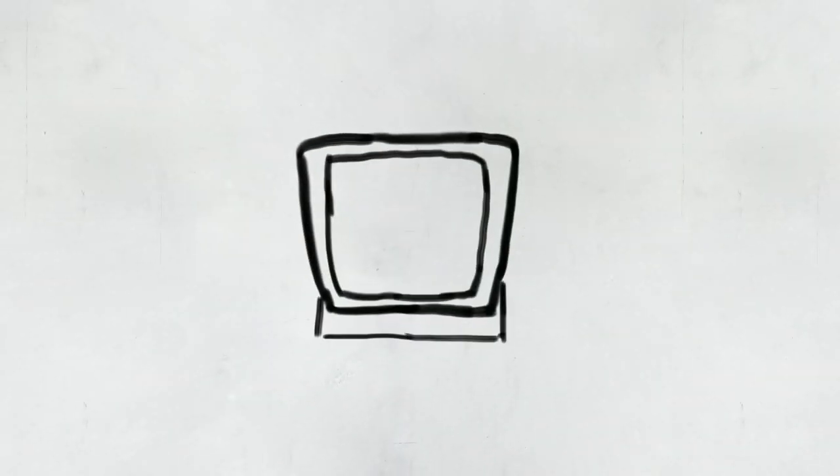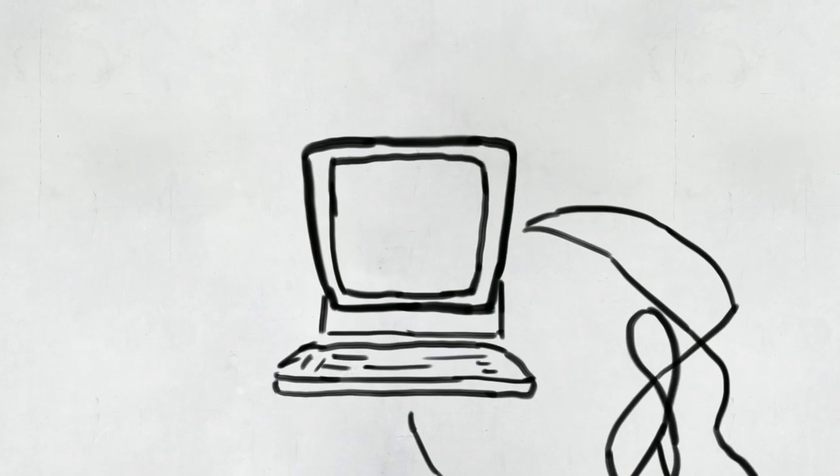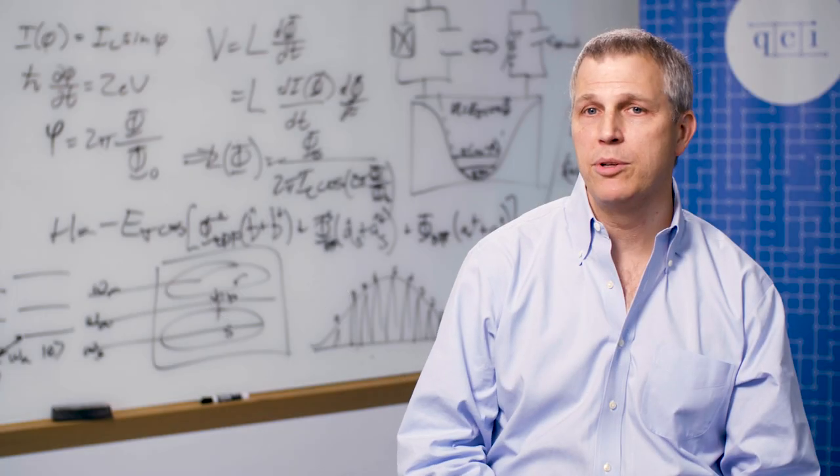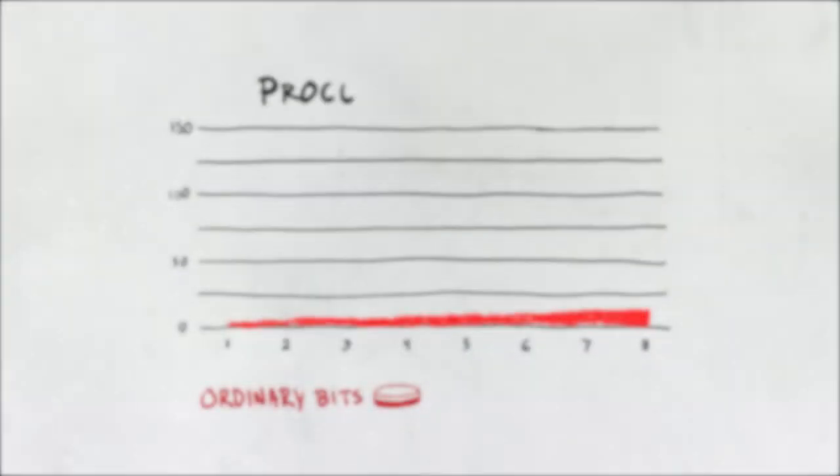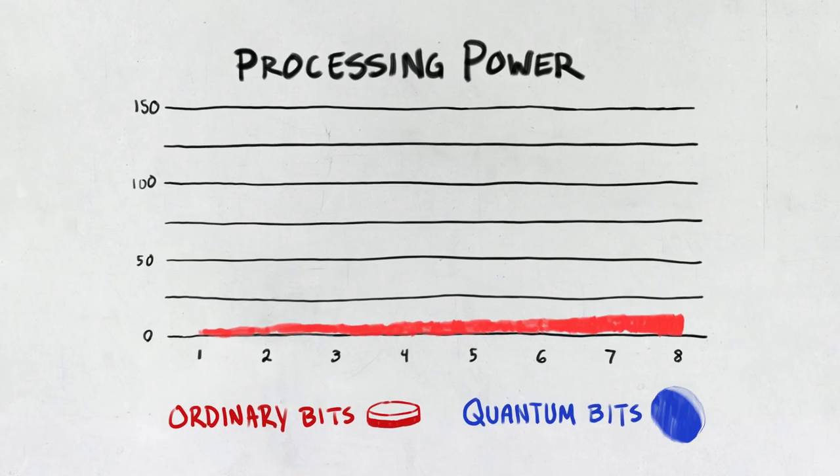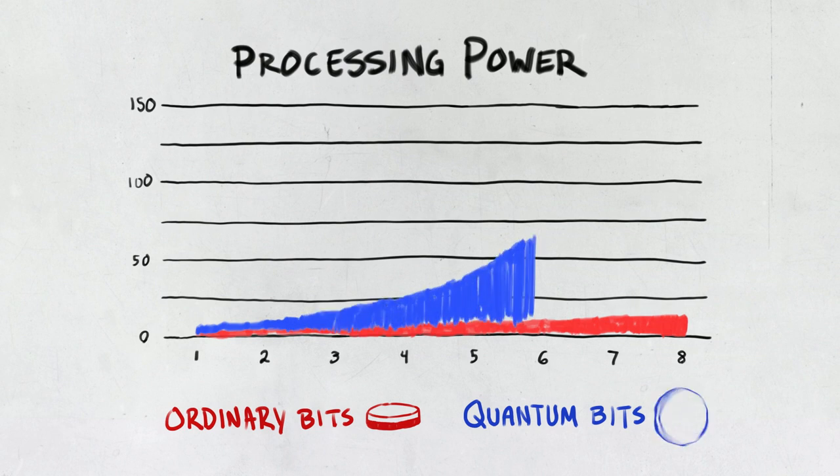We know in conventional computing that there are many problems which are essentially like trying to find a needle in a haystack. What a quantum computer can do because of its use of these rules of quantum mechanics is it can explore many potential computations in parallel and reach an answer much more efficiently.